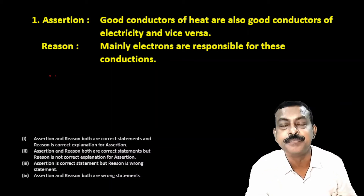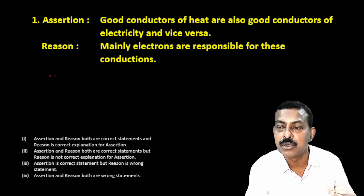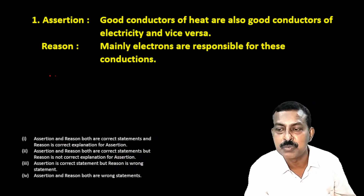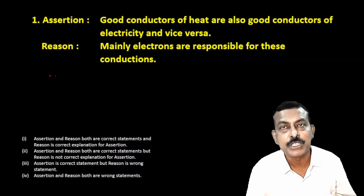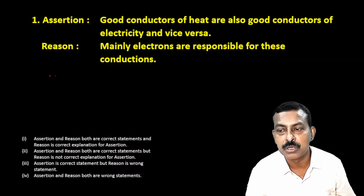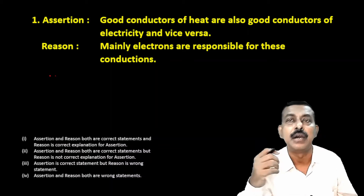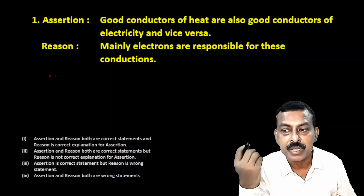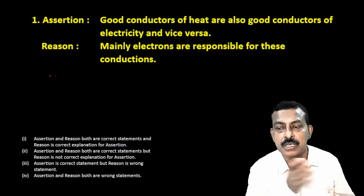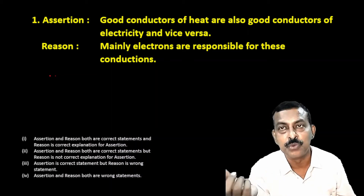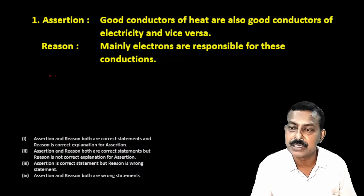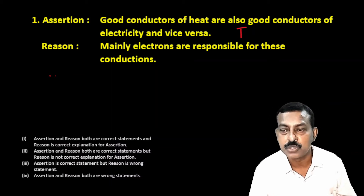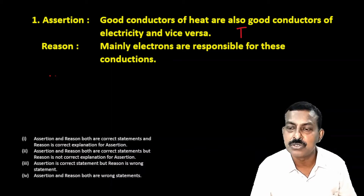The assertion is: good conductors of heat are also good conductors of electricity and vice versa. The reason is: mainly electrons are responsible for these conductions. Now, for the assertion — good conductors of heat are also good conductors of electricity — in both cases, whether conduction of heat or electricity, it is the electrons due to which current flows through the conductor. So the assertion is a correct statement. The reason — mainly electrons are responsible — is also a correct statement.